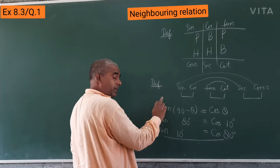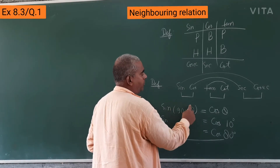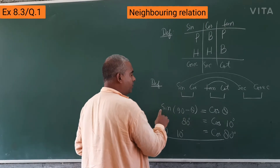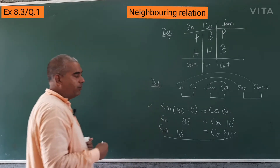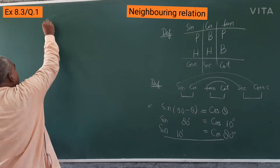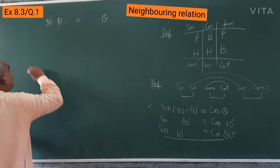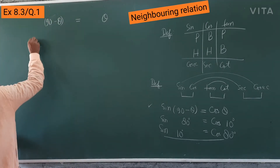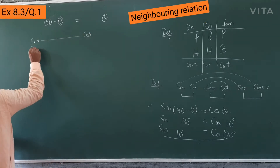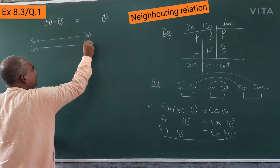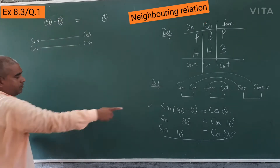I used this to teach you: sin 30 = cos 60, because 90 - 30 = 60. I gave the full detail in my earlier video. So sin(90 - θ) = cos θ, and cos(90 - θ) = sin θ. When you write sin, you get cos, and when you write cos, you get sin.